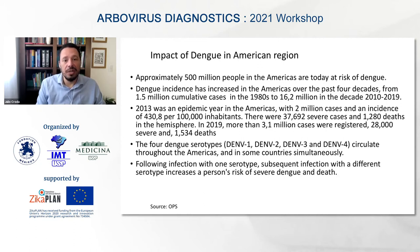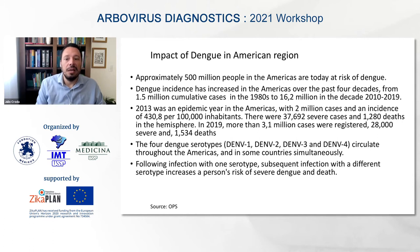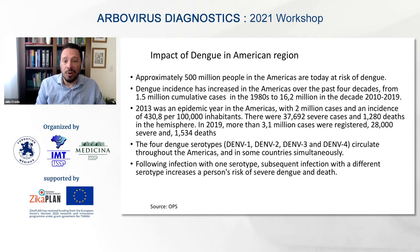Nowadays, more than 500 million people in the Americas are at risk of dengue. Dengue incidence has increased over the past four decades — from 1.5 million cumulative cases in the 1980s to more than 60 million cases between 2010 and 2020. In 2013, there was a huge epidemic with more than 2 million cases, an incidence exceeding 400,000, more than 35,000 severe cases, and more than 1,000 deaths in the Americas. In 2019, there were more than 3 million cases, more than 28,000 severe cases, and more than 1,000 deaths.